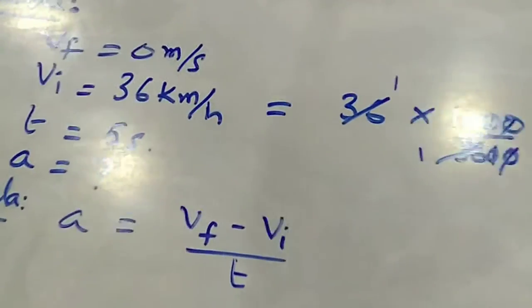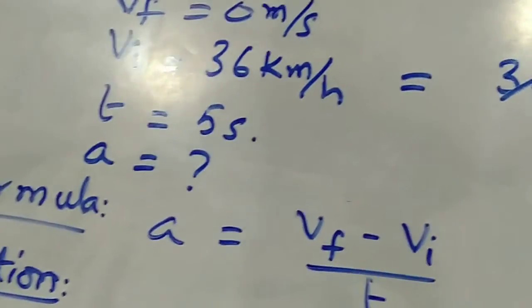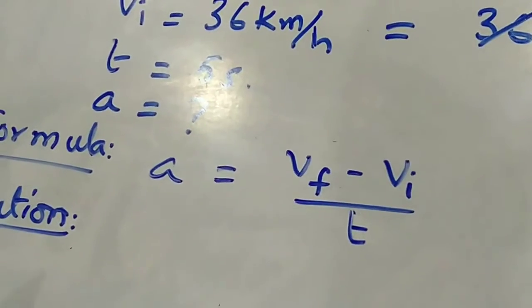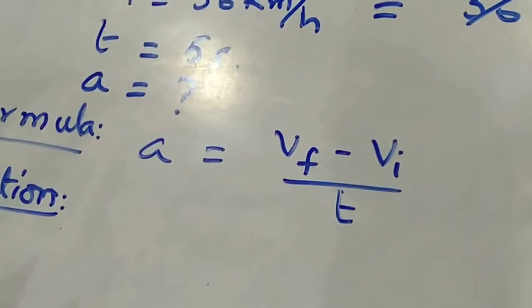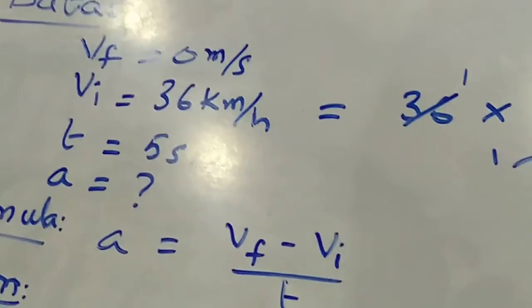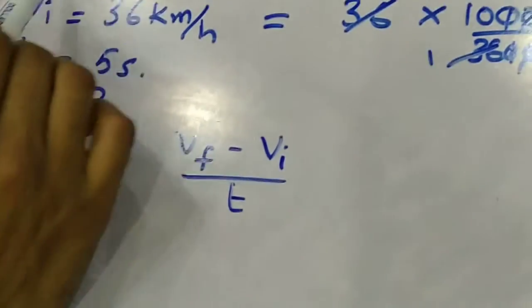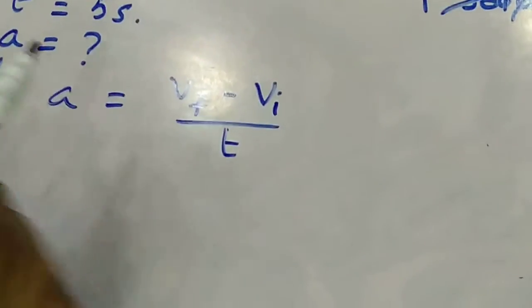Okay, let's look at the second thing. They didn't tell the final velocity, but they gave a very important hint: it is brought to rest. Rest means there is no motion in the body. And when there is no motion, it means its velocity is 0. So the final velocity Vf is 0 meters per second.